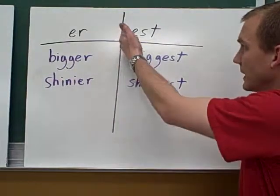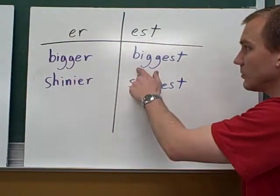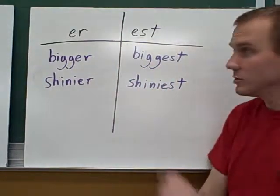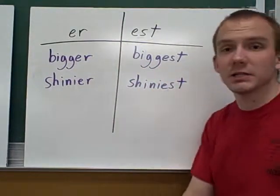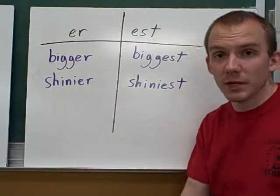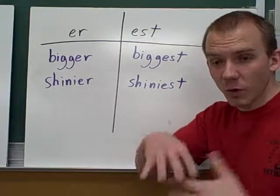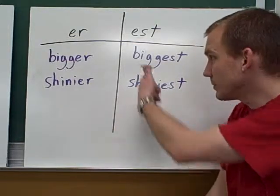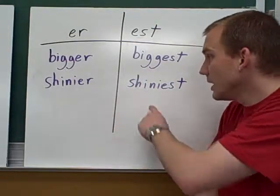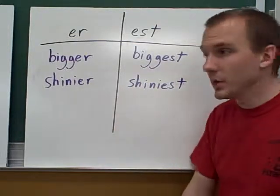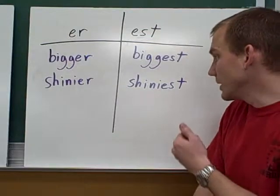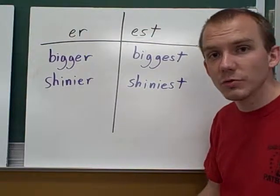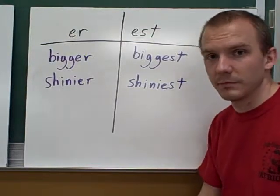And then EST — let's work with 'big' and 'shiny' again. You might have 'biggest,' whatever is the biggest out of the whole group, or more than two — that's the biggest. And same with 'shiny': whenever you have more than two, you're looking at 'shiniest.'